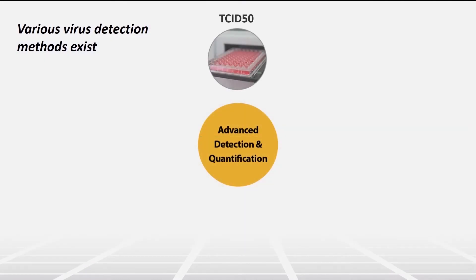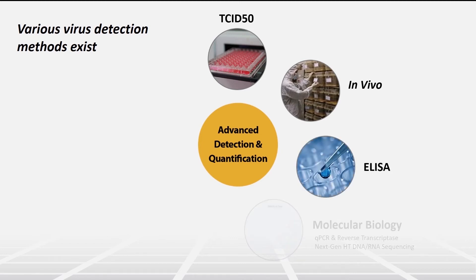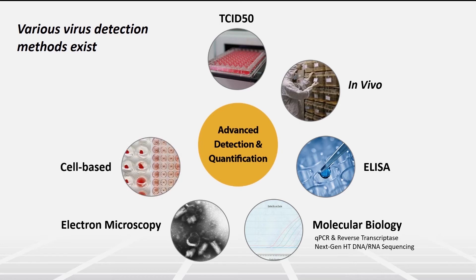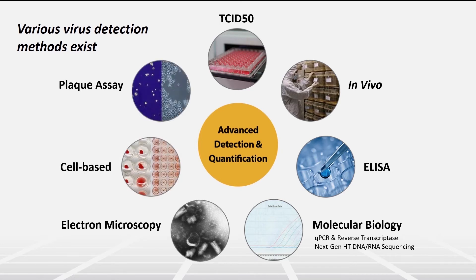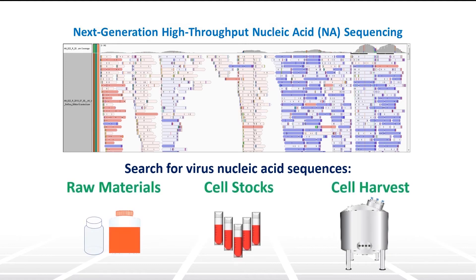A variety of analytical tools and cell-based methodologies are utilized to detect contaminating viruses. However, due to large lot sizes of raw materials and thus sampling issues, the constraints in detection limits, and the assay's ability to find extremely low levels of contaminating virus, these testing methods alone are not sufficient. Another testing option is to incorporate next-generation high-throughput nucleic acid amplification and sequencing technologies to search for contaminating virus, but this too has its challenges due to sampling issues and the complex nature of the analysis.